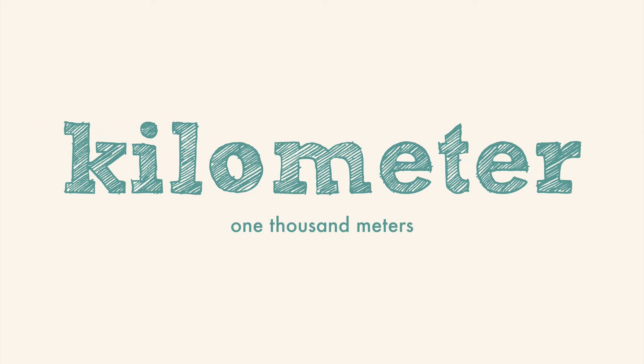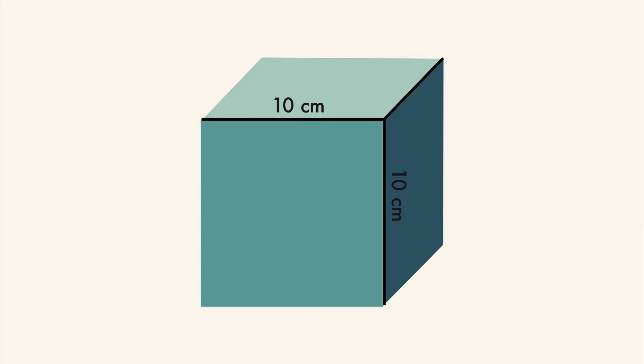The prefixes can be used with other units of measure like volume. If we want to know the volume of a cube, you can measure the length, the width, and the height, and multiply to get volume. If a cube is ten centimeters by ten centimeters by ten centimeters, it makes a one thousand cubic centimeter cube, which is also called a liter.